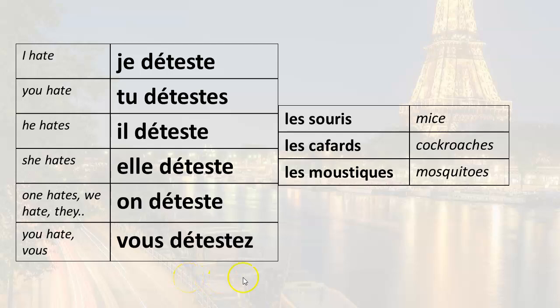...let's talk about some things that people commonly hate. For example: les souris — mice, les cafards — cockroaches, les moustiques — mosquitoes.